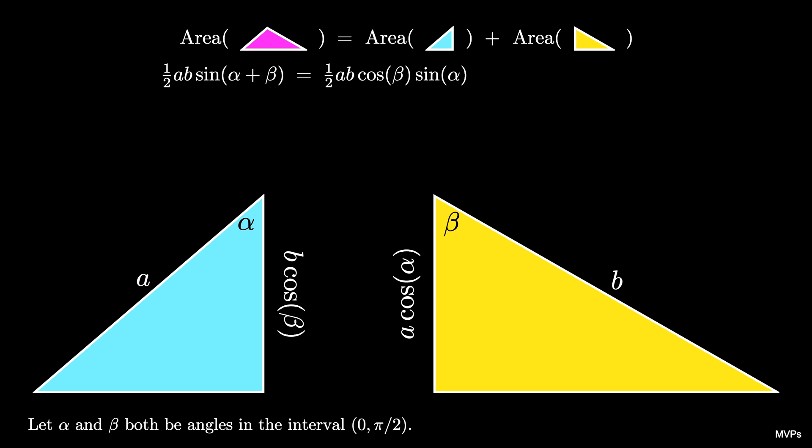So we have that one triangle is (1/2)AB cos(β) sin(α), and the other one is (1/2)AB cos(α) sin(β).